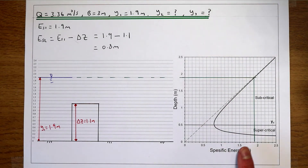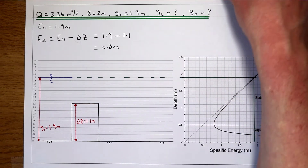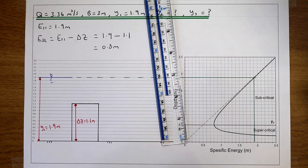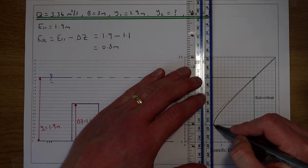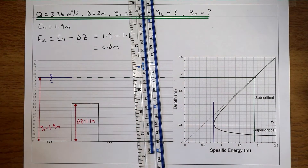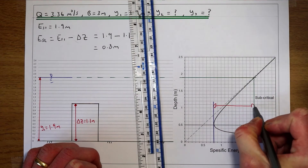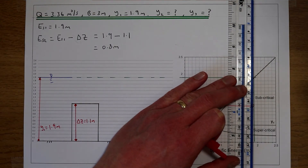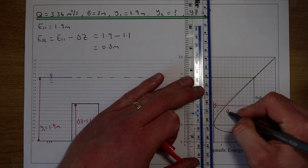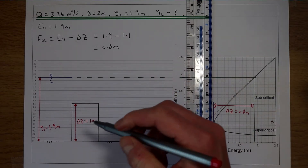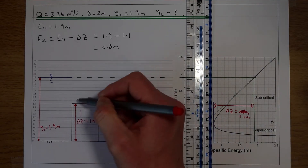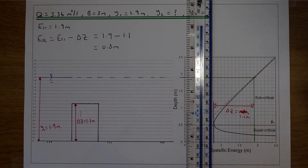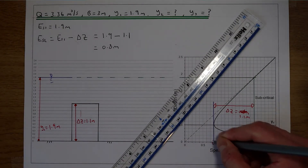So what we're going to get is a new level of specific energy in our flow above this blockage. The new level of specific energy is 0.8 metres, so we can draw a line at 0.8 metres — this is our new level of specific energy. All we've done is shift the specific energy on the x-axis down by 1.1 to 0.8; this is just the energy we've lost in the flow from putting this blockage in.